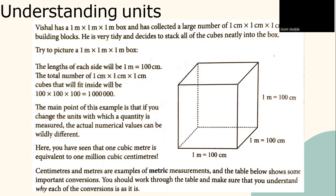The main point of this example is that if you change the units with which a quantity is measured, the actual numerical values can be wildly different. Here you have seen that 1 cubic meter is equivalent to 1 million cubic centimeters. Centimeters and meters are examples of metric measurements. And the table below shows some important conversions. You should work through the table and make sure that you understand why each of the conversions is as it is.